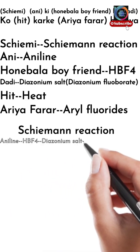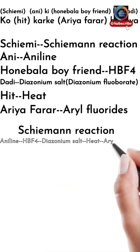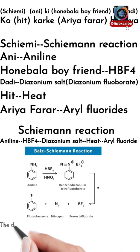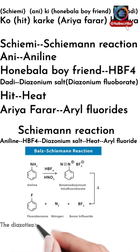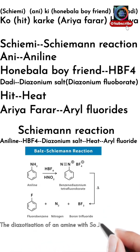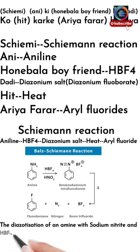Let's arrange all this sequentially. First aniline, then HBF4, then diazonium tetrafluoroborate — that is our diazonium salt — then heat, and we get aryl fluoride. This is our nice special representation of the Schiemann reaction.